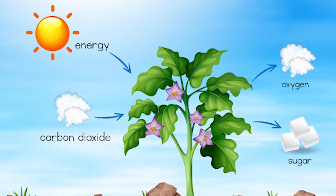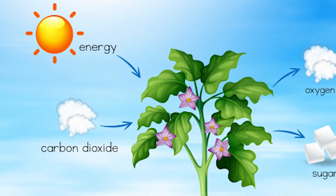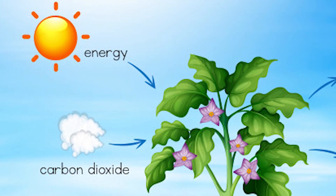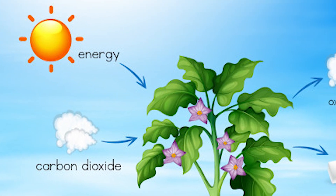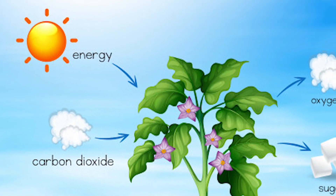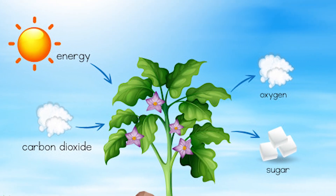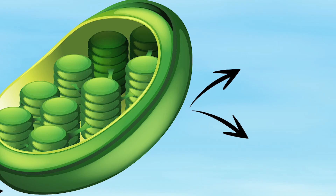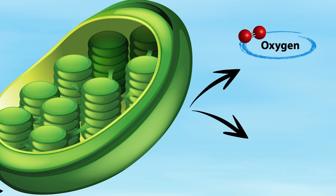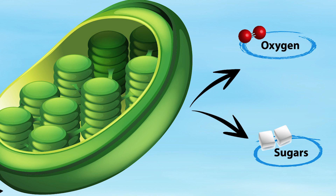Chlorophyll absorbs the sun's energy. It is this energy that is used to split water molecules into hydrogen and oxygen. Oxygen is released from the leaves into the atmosphere. Hydrogen and carbon dioxide are used to form glucose, or food for plants.